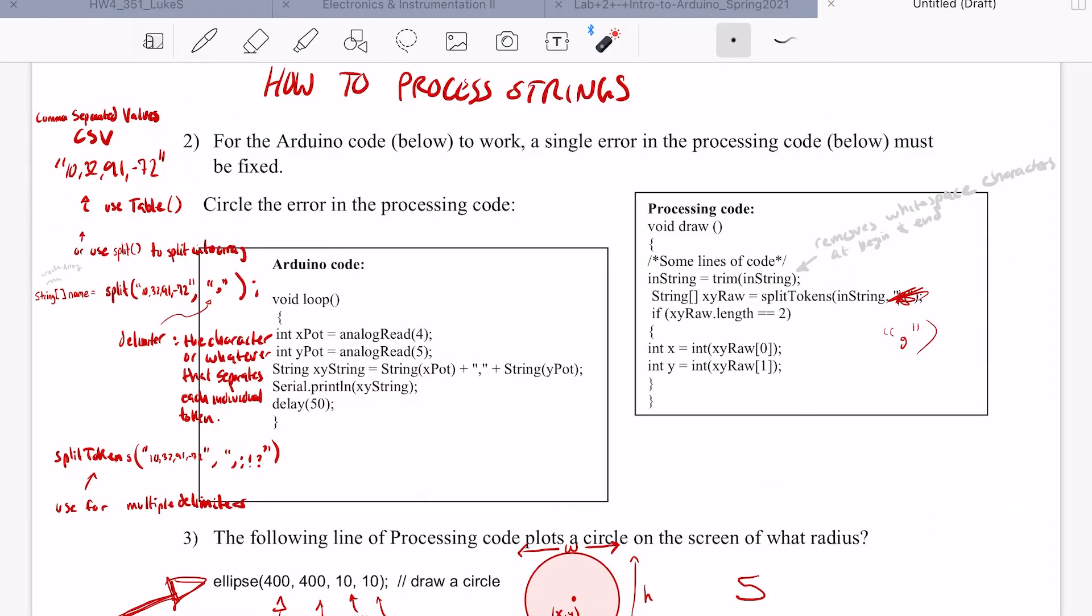So this problem number two kind of comes down to the question of how to process strings. So the Arduino code, we can see that it is taking values in from potentiometers, putting them into a string right next to each other, and then it's going to print x, y string. And then I'm assuming that x, y string goes into the processing code and is called in string. So to understand the problem here, it's helpful to understand that a string with some values separated by commas can be called comma separated values.